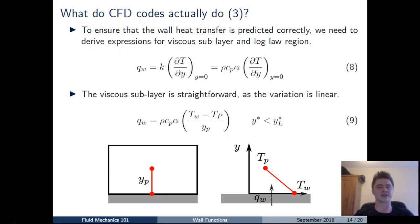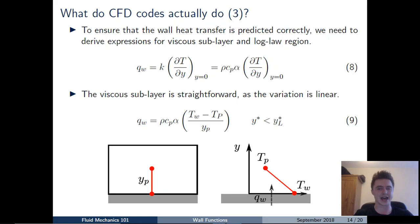First, consider what happens if the cell is in the viscous sublayer — y-star is less than the transitional value y-star_L. In that case the variation between the cell centroid and the wall is linear, so we can calculate the wall heat flux from Fourier's law: q_w equals k (thermal conductivity) times the temperature gradient at the wall. For convenience in the derivations, k is re-expressed as the product of density, specific heat capacity c_p, and thermal diffusivity alpha (Equation 8). Because the variation is linear, this is straightforward.